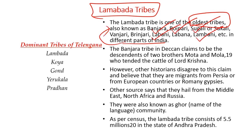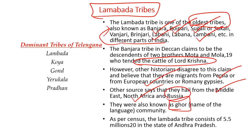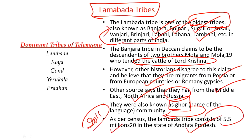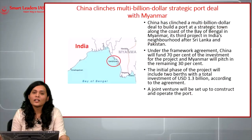Different historians give different ideas for the origin of this tribe. According to one theory, Banjara tribes are descendants of the cattle raiders of Lord Krishna. Other sources say they are migrants from Persia, European countries, the Middle East, North Africa, or Russia. This tribal community speaks a language called Gos, giving rise to the name 'Gond community.' As per the 2011 census, there are about 5.5 million Lambada tribes in Andhra Pradesh alone. Other dominant tribal groups in Telangana include Koyas, Gonds, Yerukalas, and Pradans.